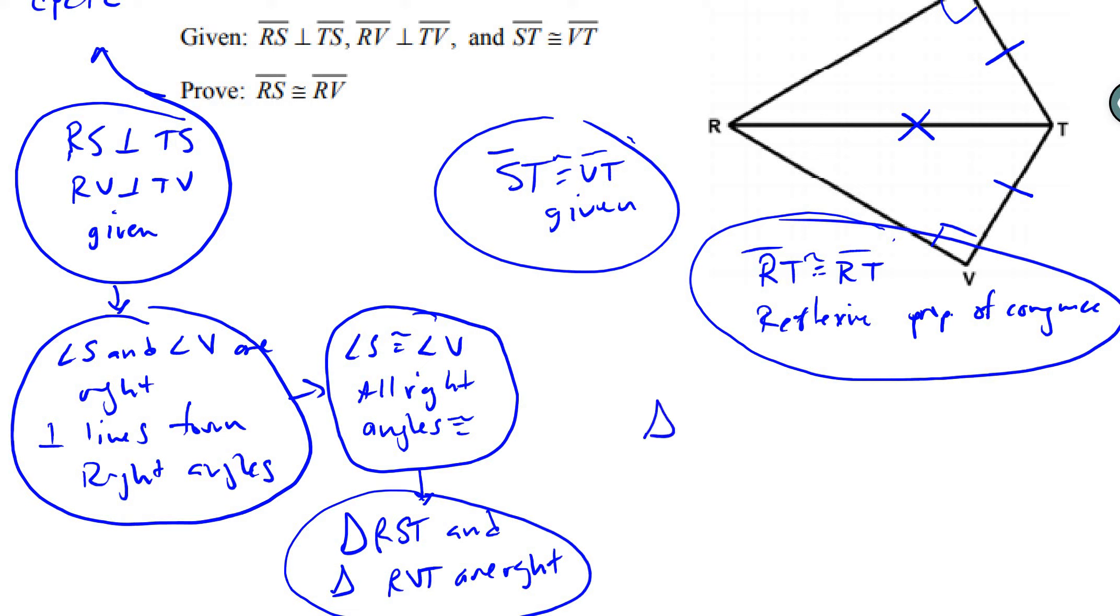And then we can say that the two triangles are congruent. So I could say triangle RST is congruent to triangle RVT by hypotenuse leg. Draw my arrows, showing everything that we need to be able to show that.